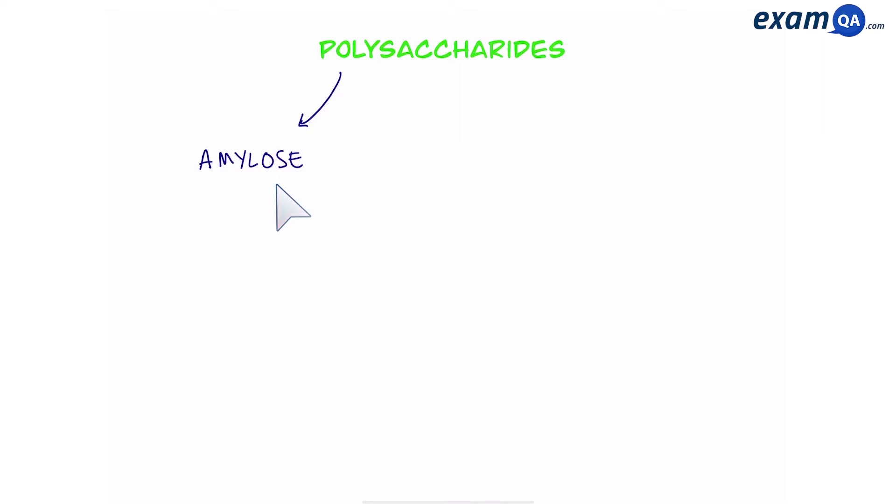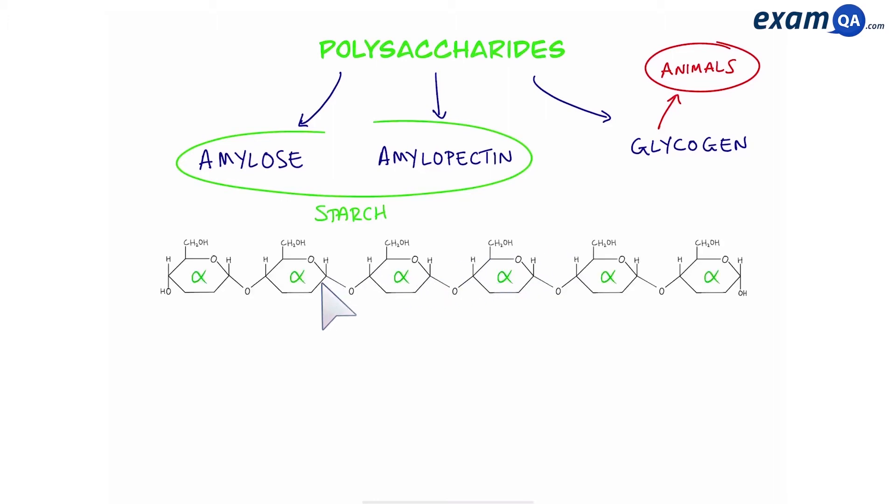Now in the previous video we met amylose, amylopectin which both make starch, and glycogen which is found in animals. Now although these are all different polysaccharides they have one thing in common: they are all chains of alpha glucose.